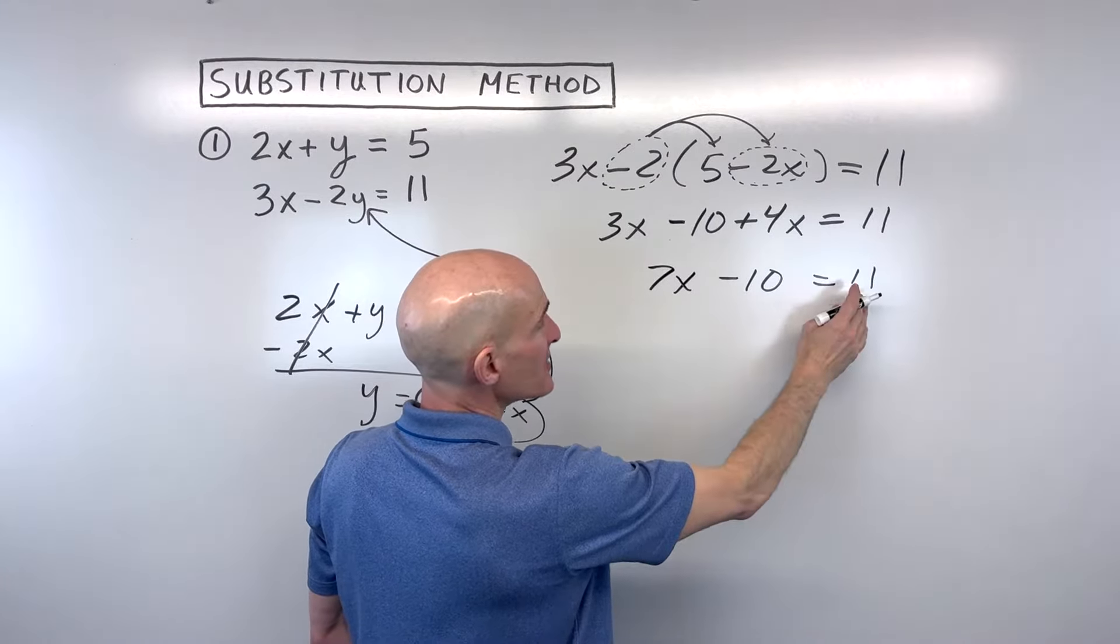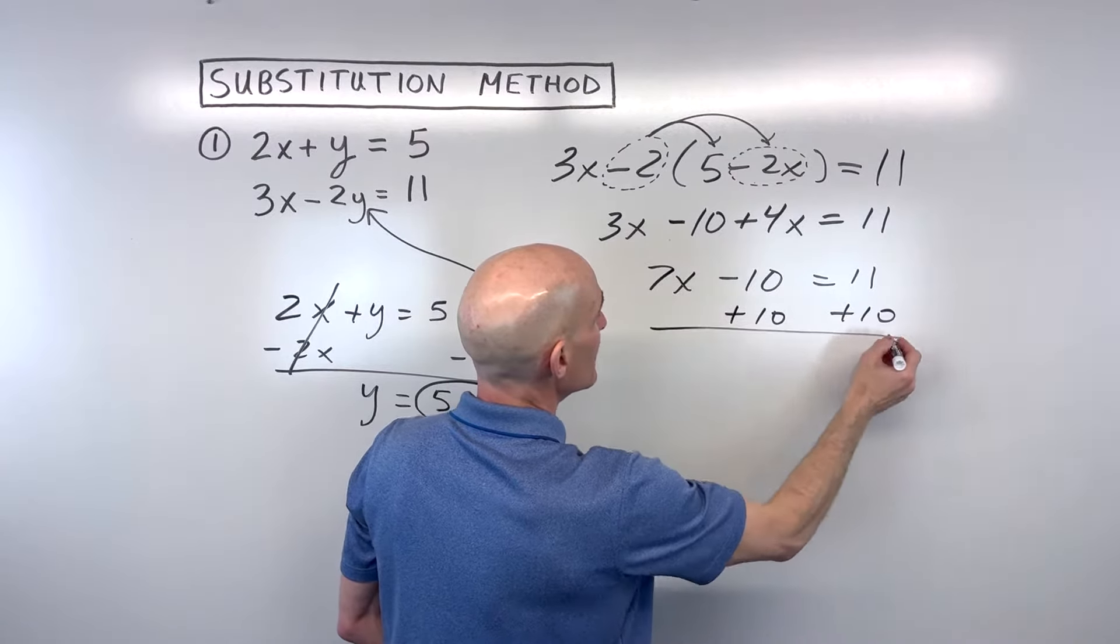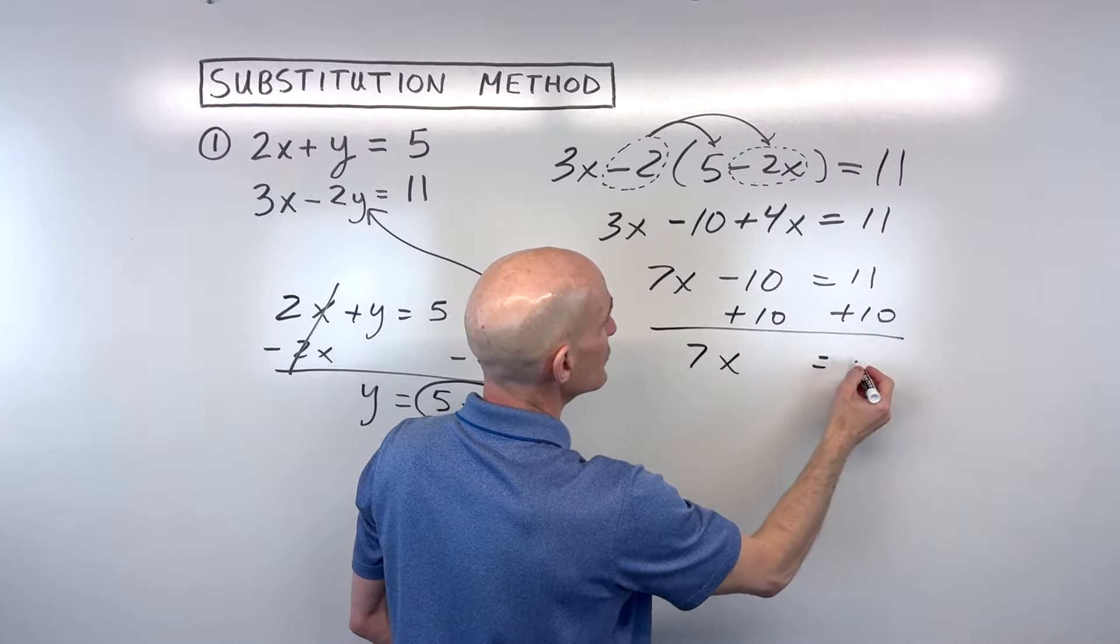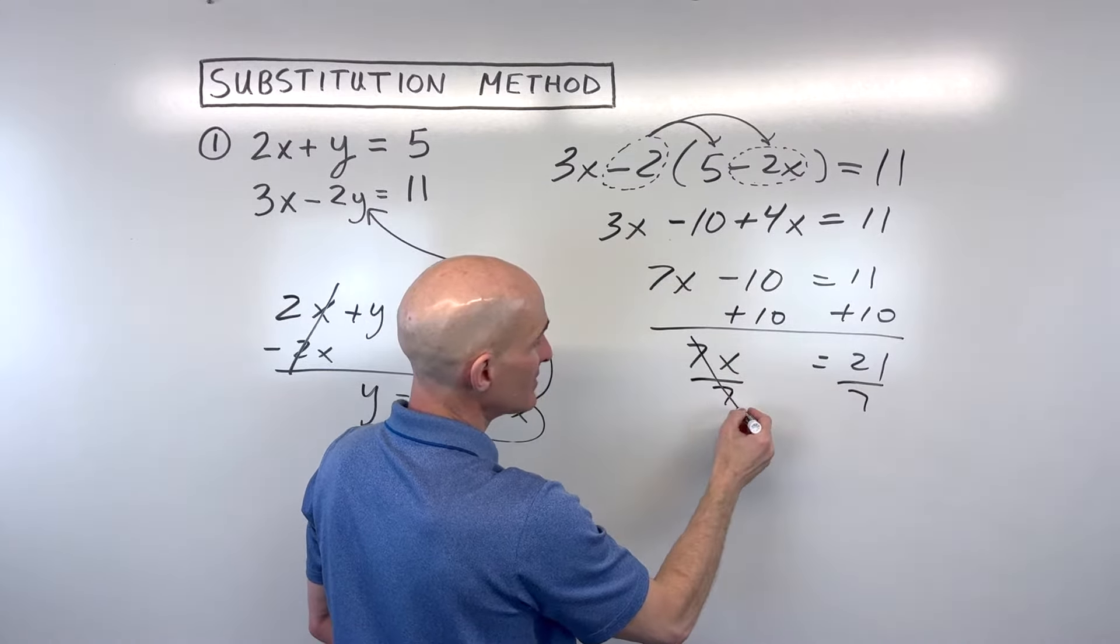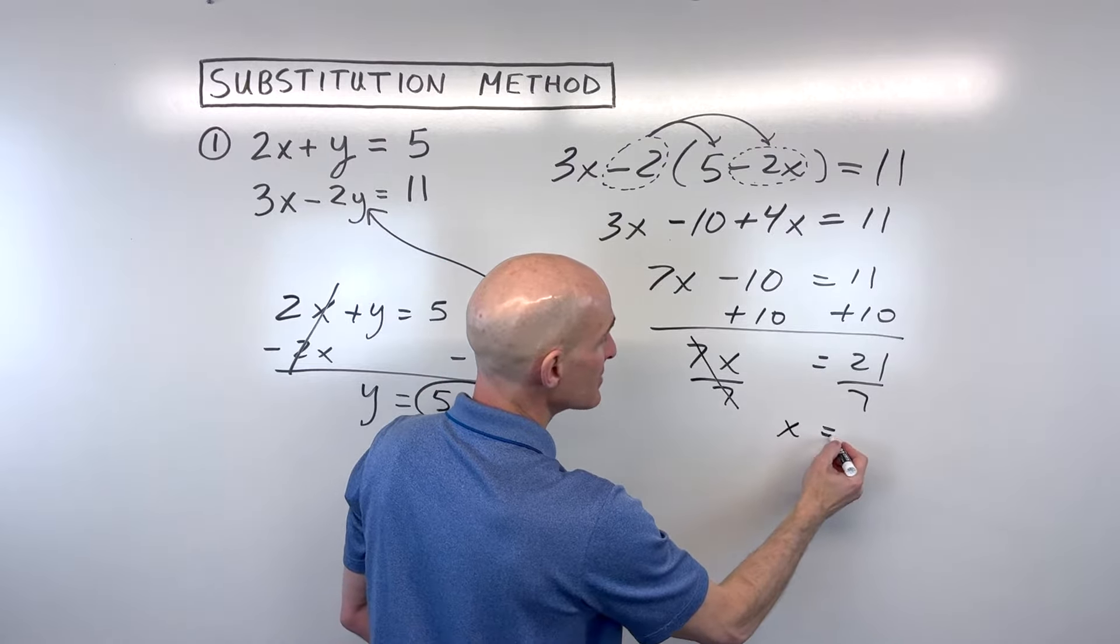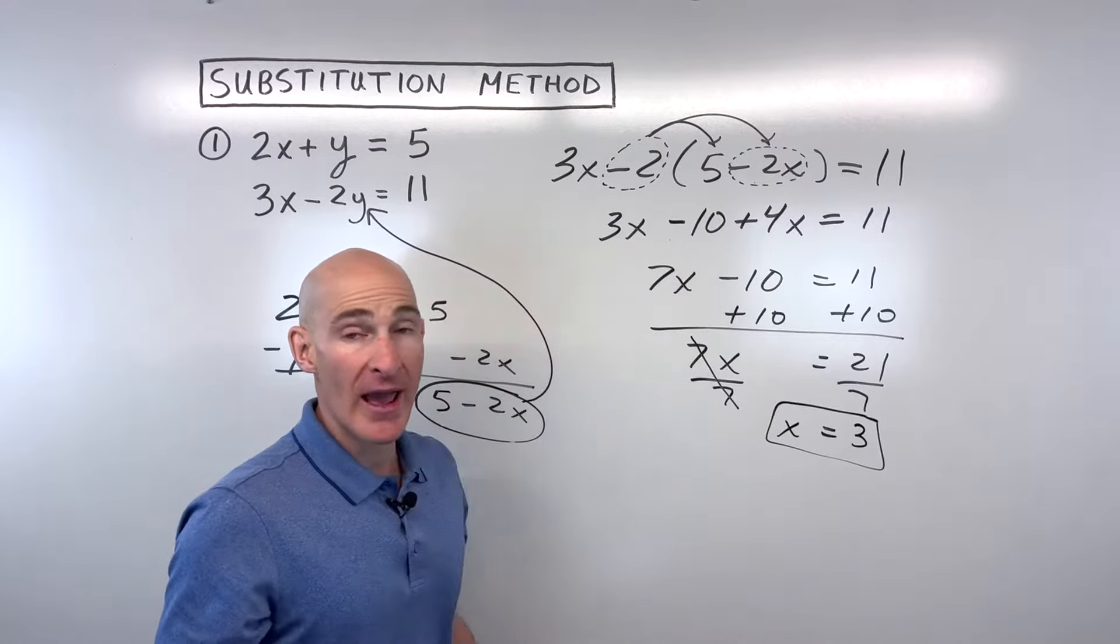3x plus 4x is 7x minus 10 equals 11. We want to get the variables on one side, numbers on the other, so let's add 10 to both sides. So now we have 7x is equal to 21, and we just want to solve for 1x, so let's divide both sides by 7. 7 divided by 7 is 1x. 21 divided by 7 is 3, and now we know what x is.